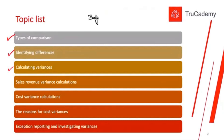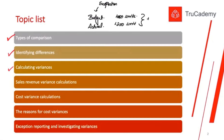When we set up a budget, that is our expectation. For example, we want to produce 1000 units in a month — that is our budget. Now we compare it with actual performance: we actually produced 1200 units. When we compare budgeted performance with actual performance, we realize we produced 200 more units than expected. This difference between budgeted and actual is what we call a variance.